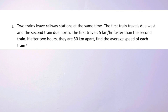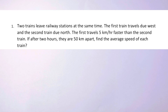Two trains leave railway stations at the same time. The first train travels due west and the second train due north. The first travels five kilometers per hour faster than the second train. If after two hours they are 50 kilometers apart, find the average speed of each train.